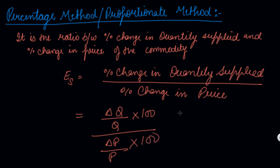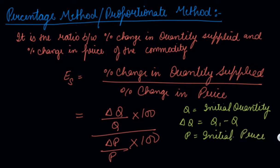Where your quantity is your initial quantity, your change in quantity is equal to Q1 minus Q, that is your new quantity minus your initial quantity. Your price is your initial price. Your change in price is your new price minus your initial price. And this is the formula how we calculate your elasticity of supply.